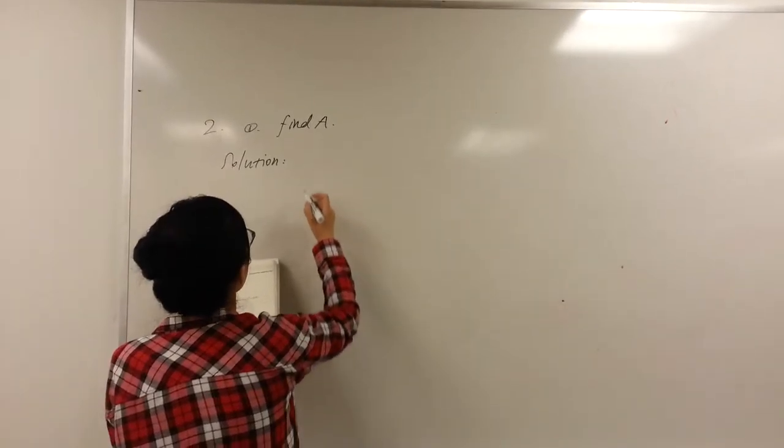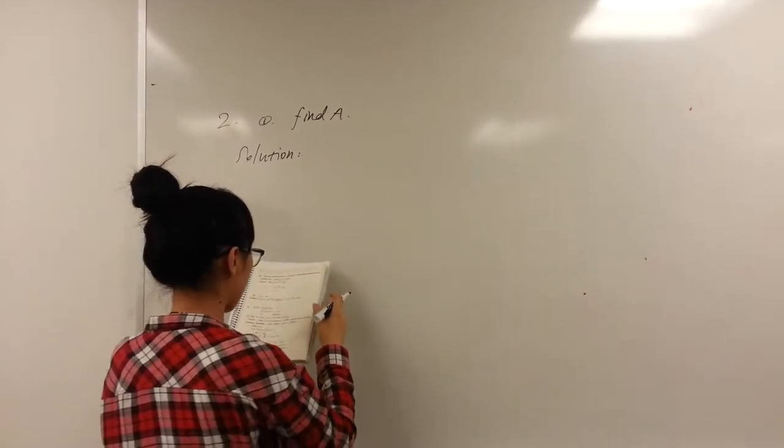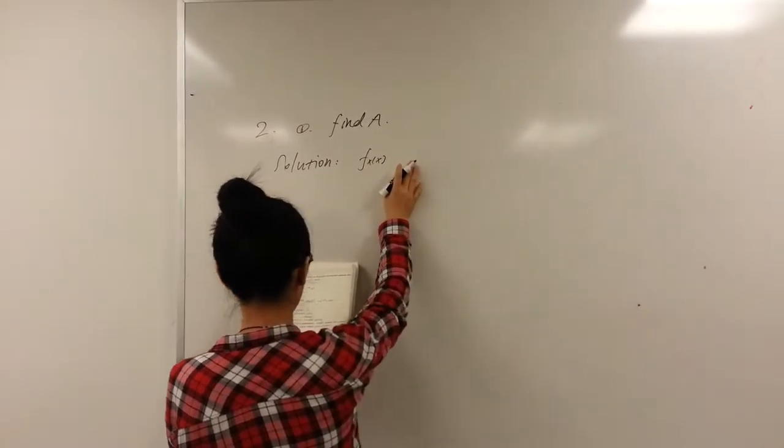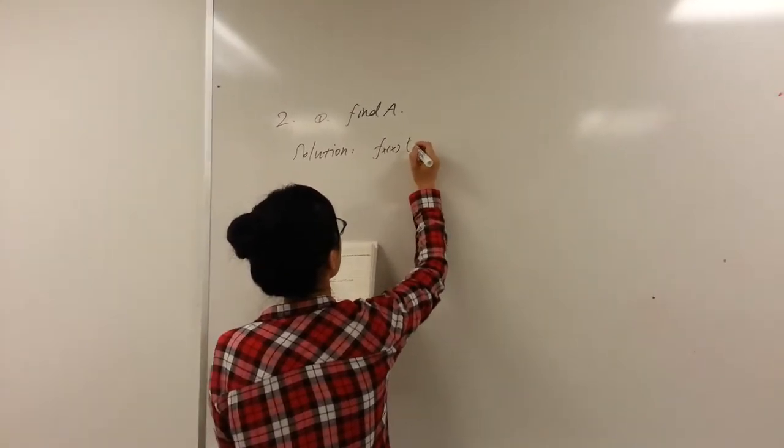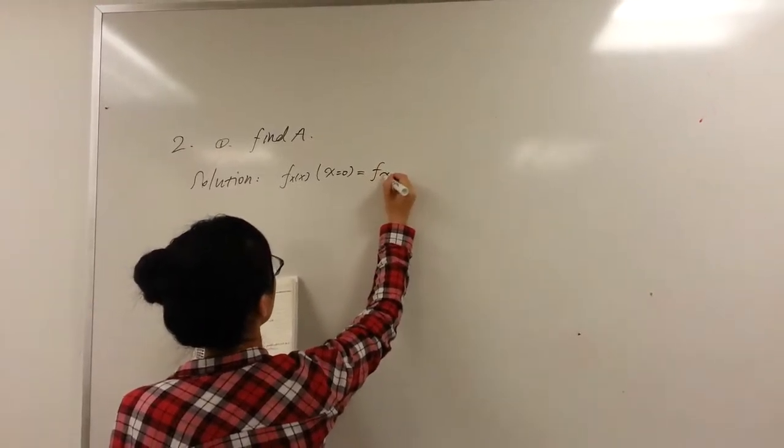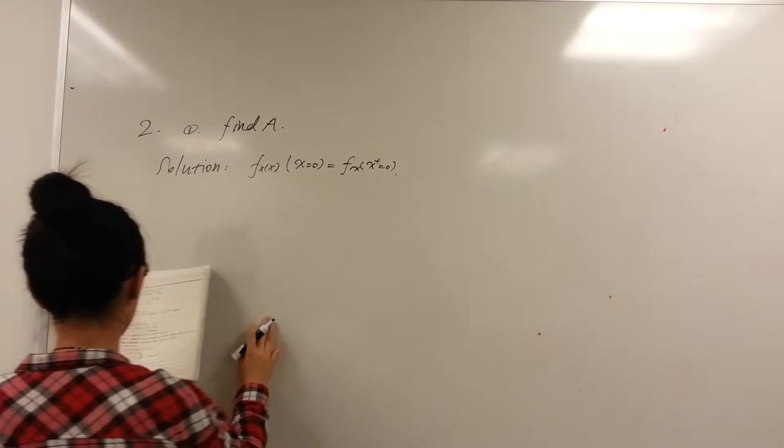This x is a continuous variable, therefore fx will be a continuous function, which means when x equals 0, it will equal to this one.